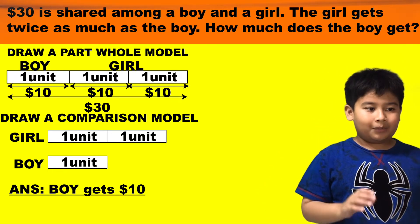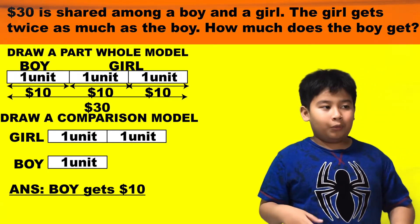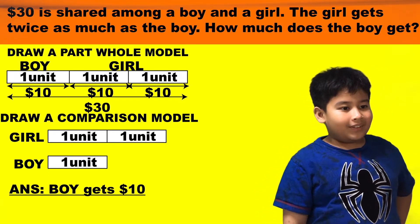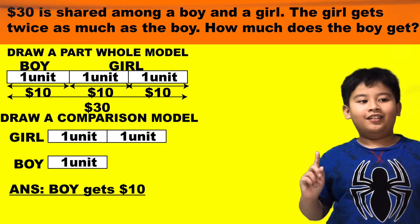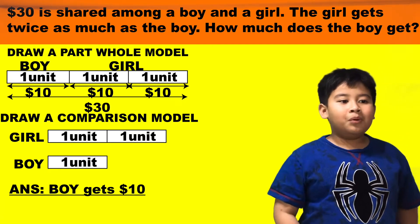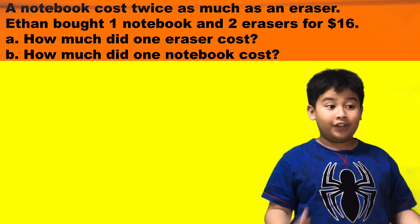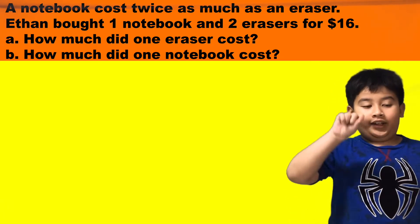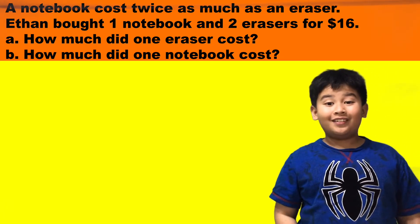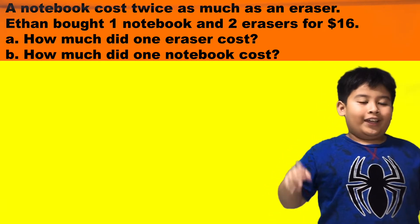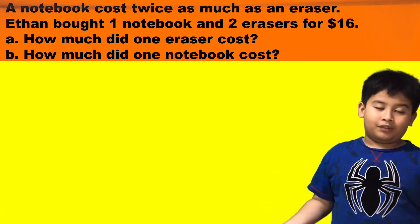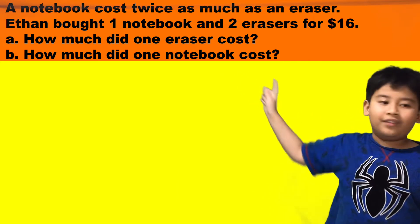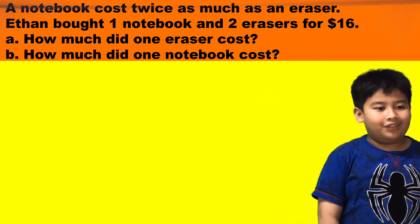And so, how much does the girl get? She gets $20. Okay, now the next question: a notebook costs twice as much as an eraser. Ethan bought one notebook and two erasers for $16. A — how much did one eraser cost? And B — how much did one notebook cost?